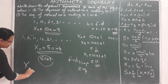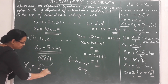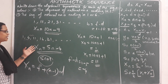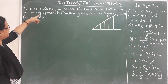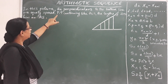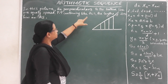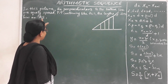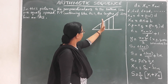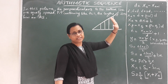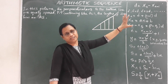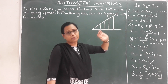Now, in this picture the perpendiculars to the bottom line are equally spaced. Prove that continuing like this, the lengths of the perpendiculars form an arithmetic progression. If we place perpendicular lines on the bottom line, we get lines that form an AP or AS. We will try to prove this using triangle ABC with points P, Q, R, S on the sides.